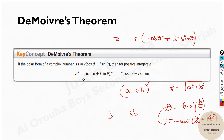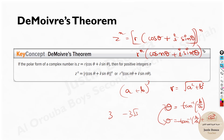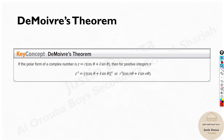Now we are looking at De Moivre's Theorem formula. It is not that difficult. Basically if you take the power on both sides, R becomes R to the power N. And for the angle, you cannot take power directly — it will be cos of N times theta plus i sine of N times theta. So N is multiplied to theta. Now let's look into the problems and you will understand how exactly to solve them.